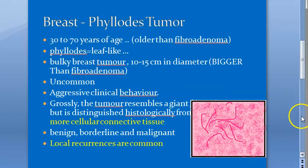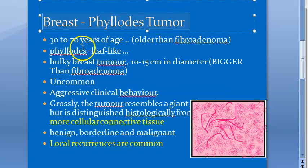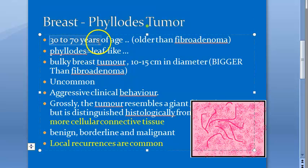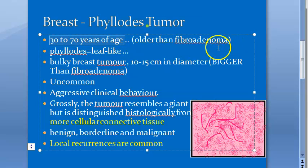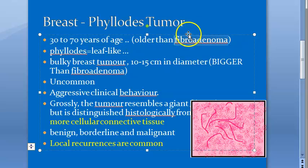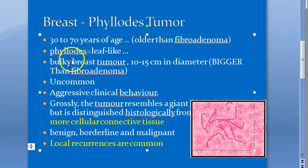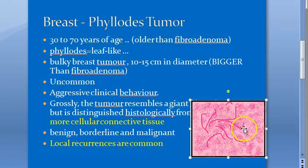Phylloides tumor of breast occurs from 30 to 70 years of age — that is in older females. In fibroadenoma it was 15 to 30 years. Phylloides means leaf-like.